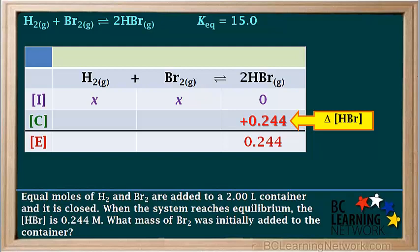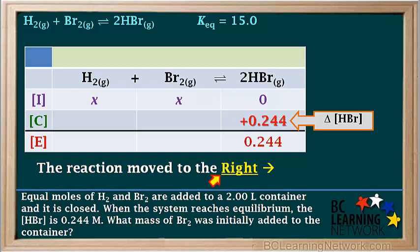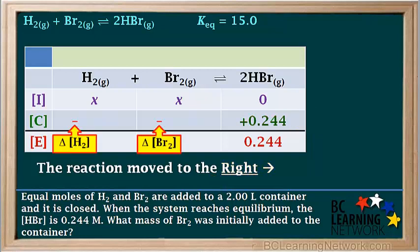In order to go from 0 to 0.244, the concentration of HBr must have increased by 0.244 molar. So we write plus 0.244 here for the change in concentration of HBr. Because the change in concentration of HBr is positive and the concentration of HBr increased, the reaction must have moved to the right as it went from its initial state to equilibrium. Because the reaction moved to the right and the concentration of HBr went up, it means that the concentrations of the reactants H2 and Br2 both must have gone down, so their changes in concentration will both be negative.